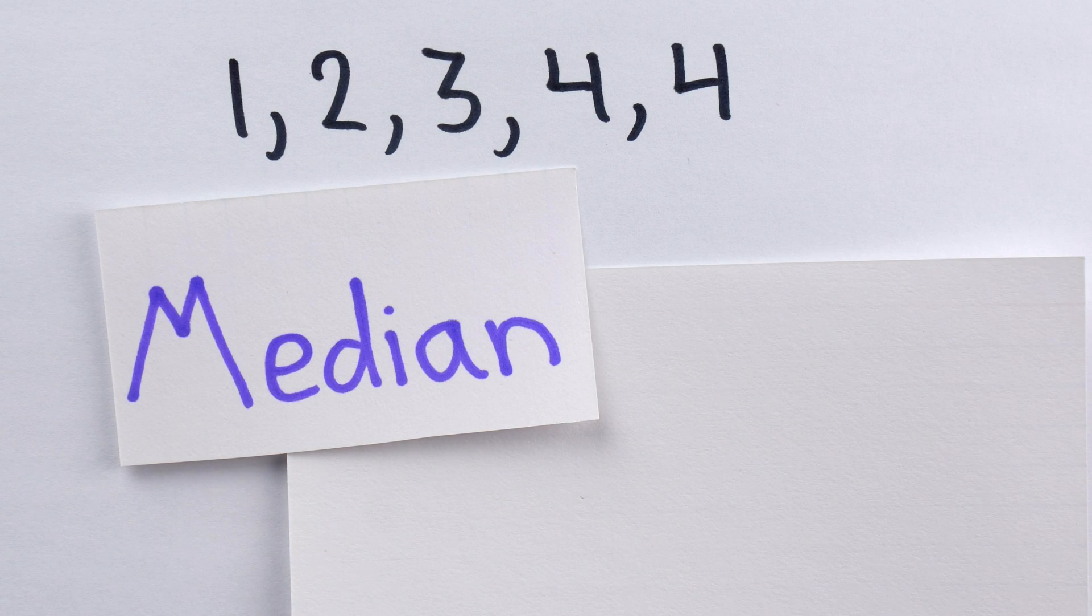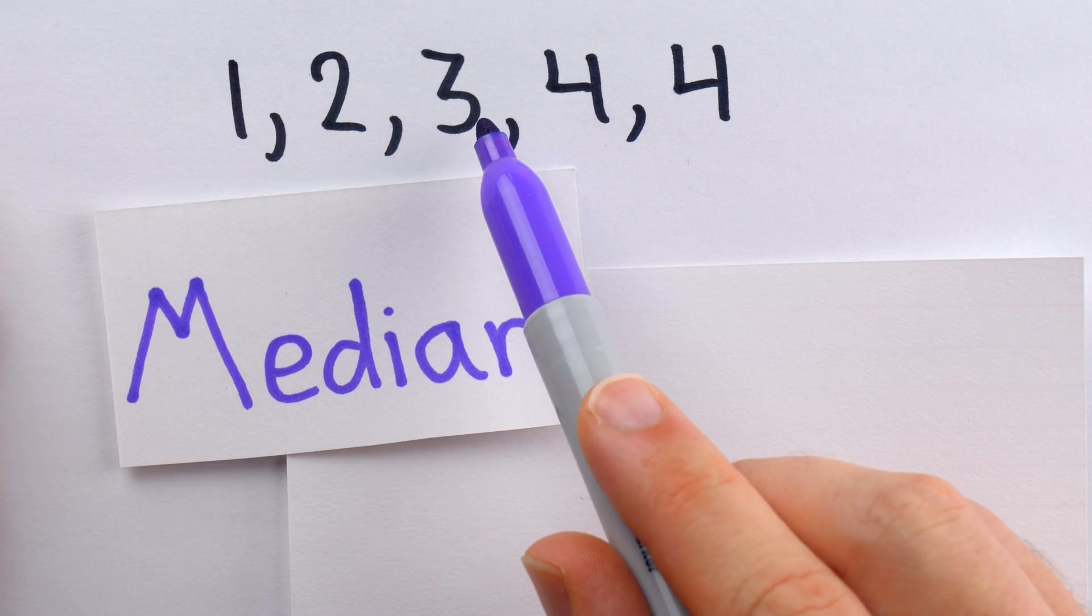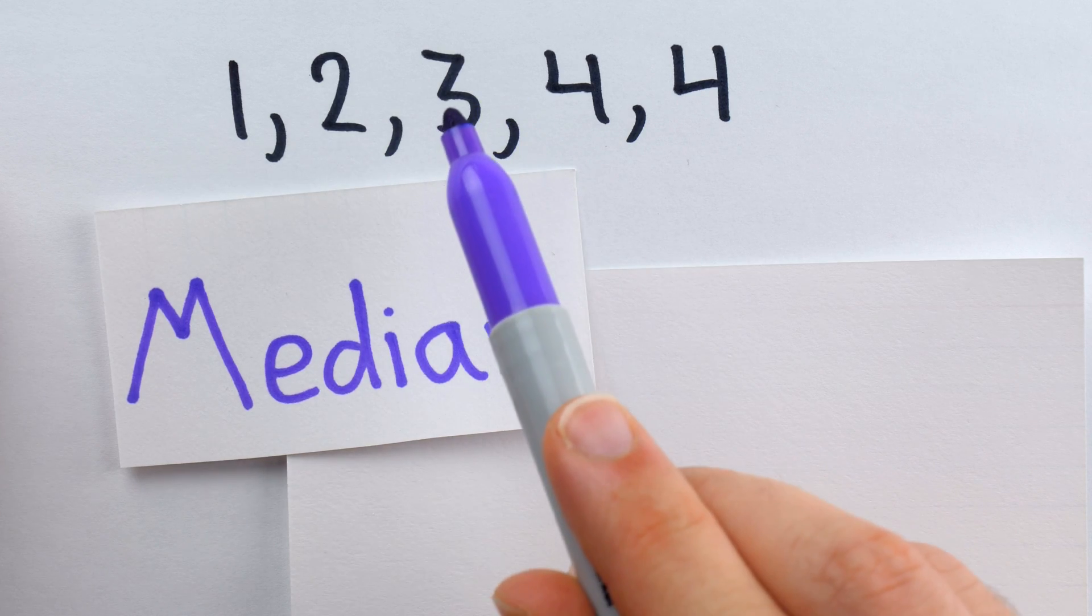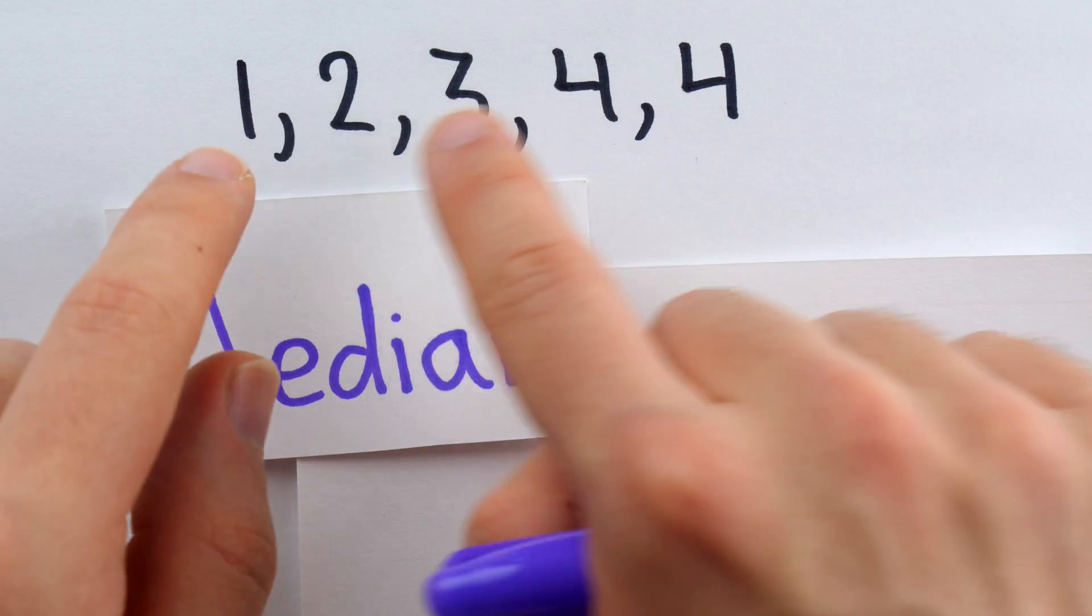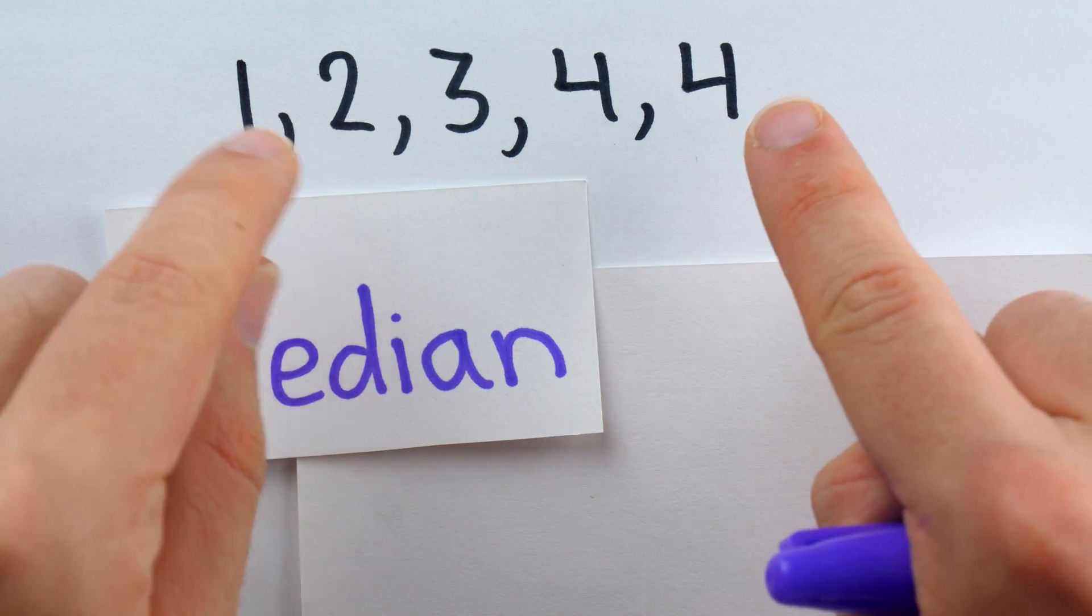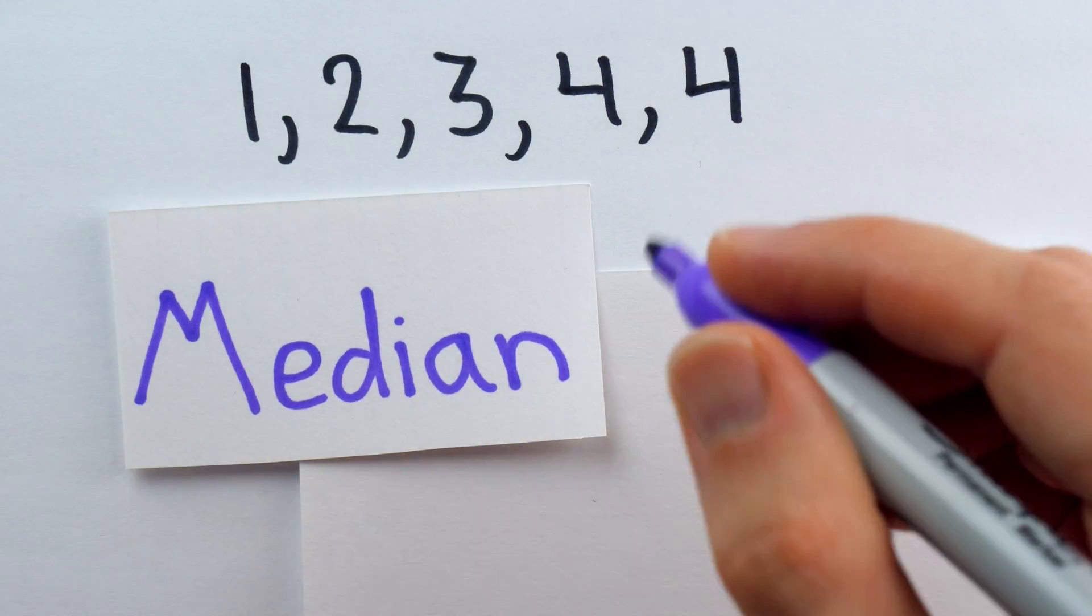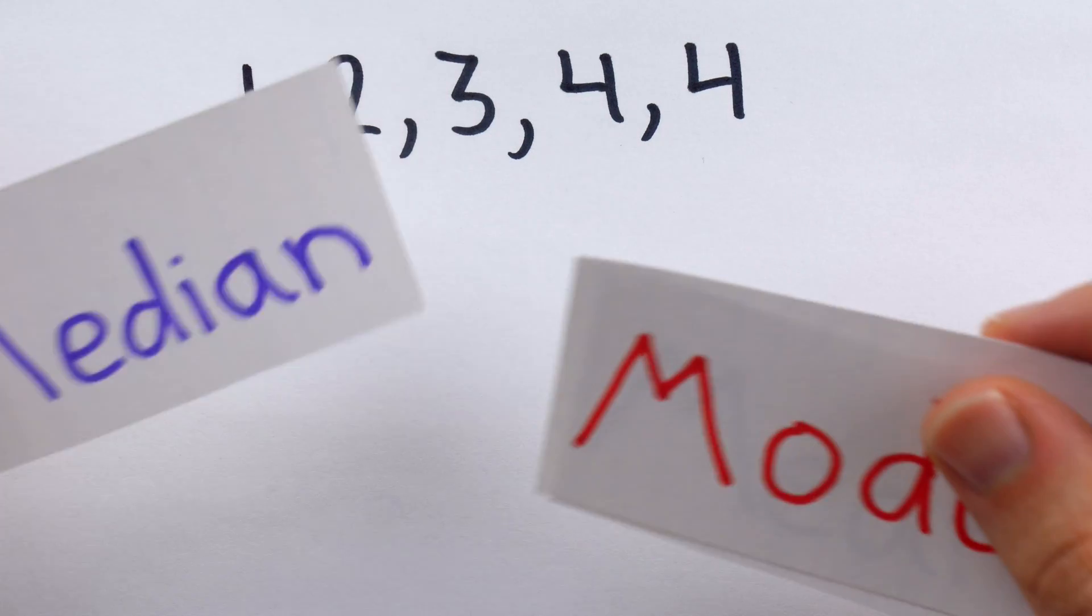Finally, the median. The median of a data set is just the data point in the middle. We see that 3 is in the middle of this set. There are two numbers to the left and two numbers to the right. Importantly, the data is in order from least to greatest. So we see that number in the middle, which is the median, is 3.